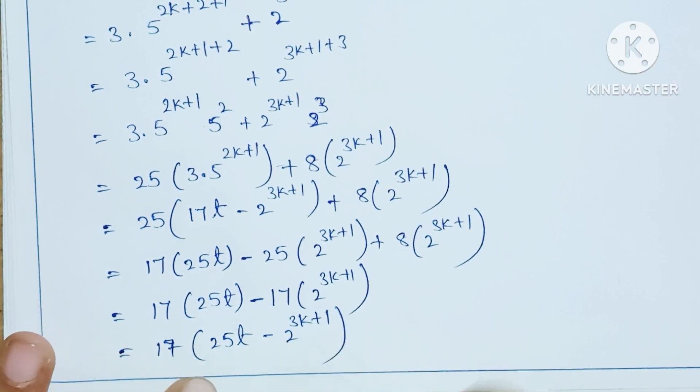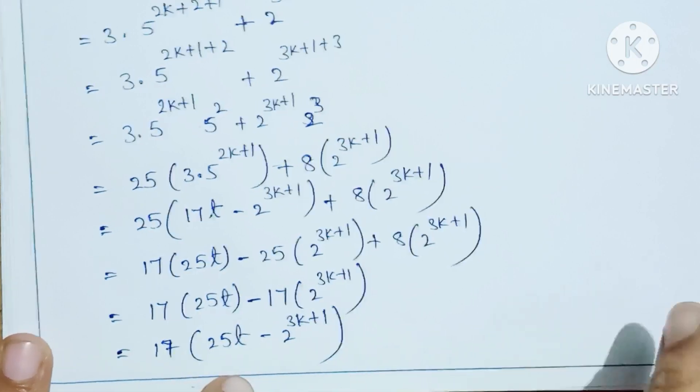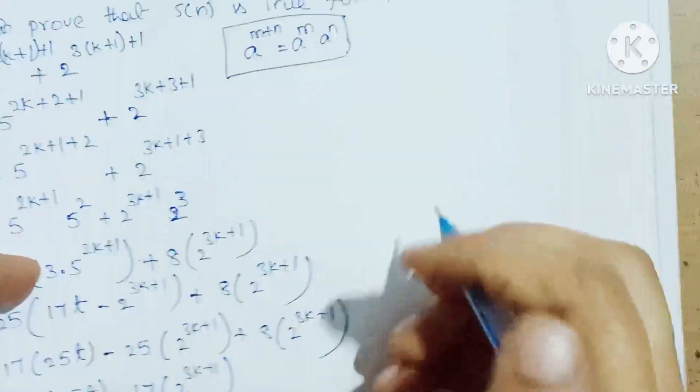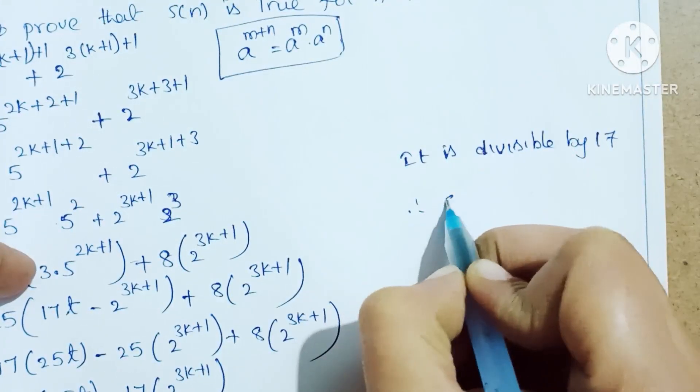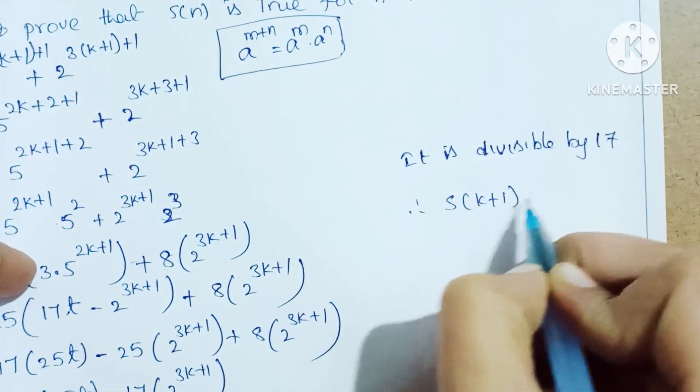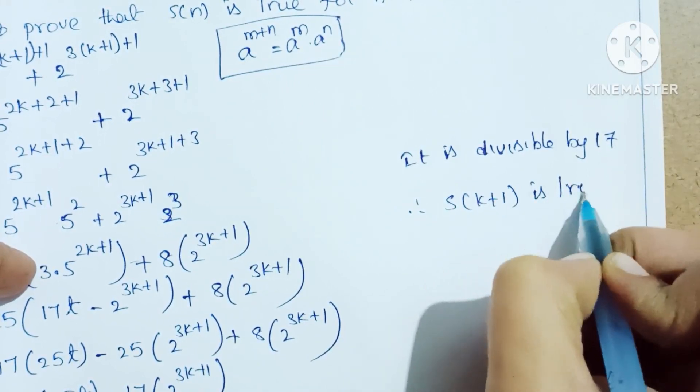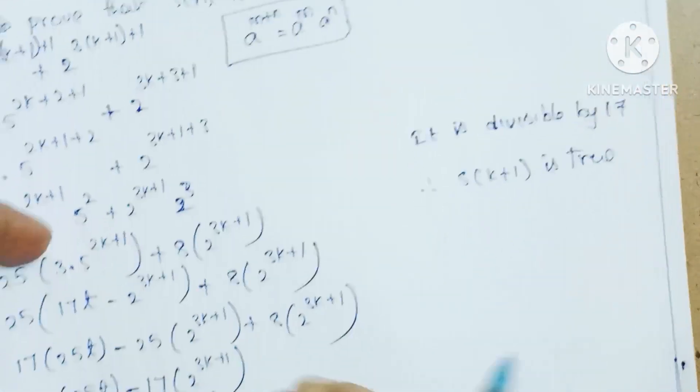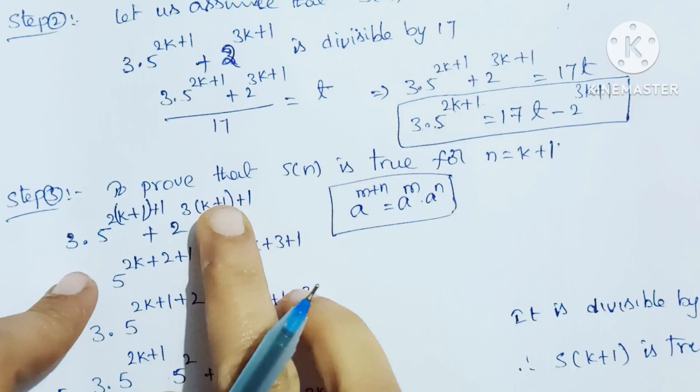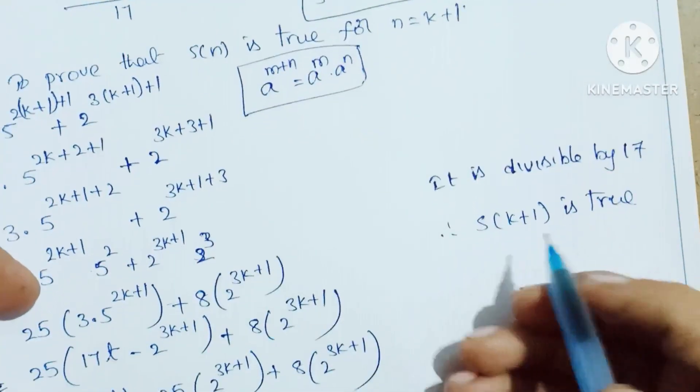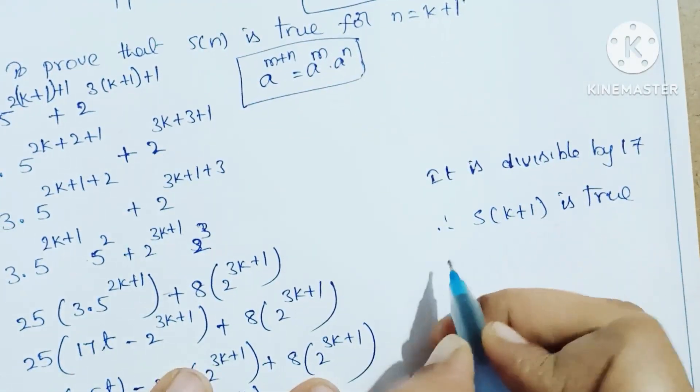17 into some value. This is divisible by 17. Therefore S of k plus 1 is true. This condition with n equals k plus 1 is divisible by 17, so k plus 1 is true.